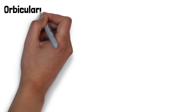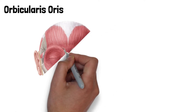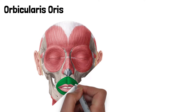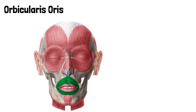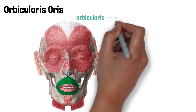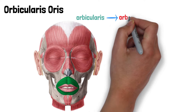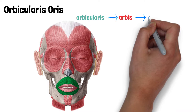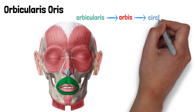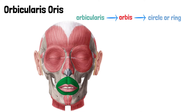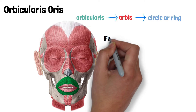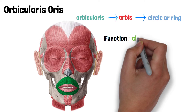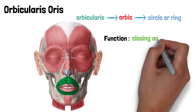The orbicularis oris muscle is a circular muscle that encircles the mouth to form the lips. The term orbicularis comes from the Latin word orbis, which means circle or ring, indicating the circular shape of the muscle. It is responsible for closing and protruding the lips.